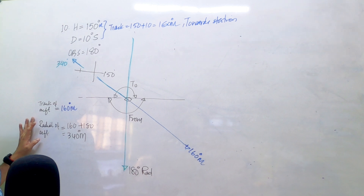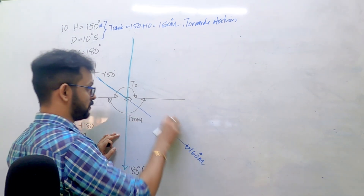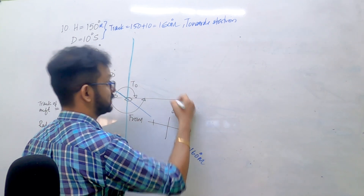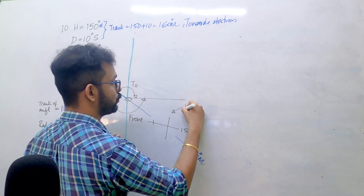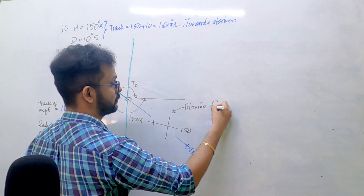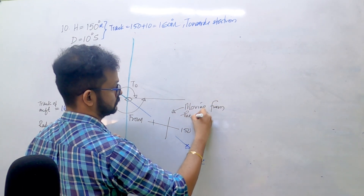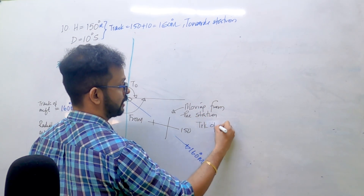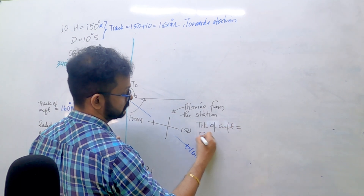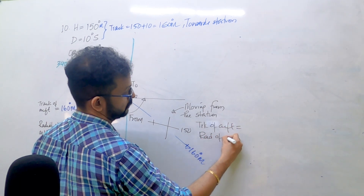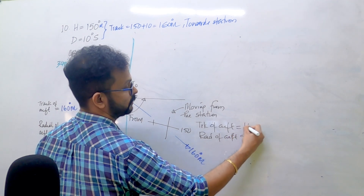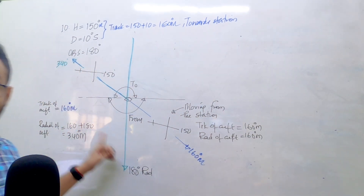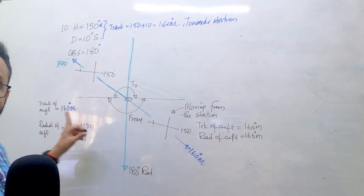If I place the aircraft moving from the station, then both the track of the aircraft and the radial of the aircraft are 160 degrees - both will be the same. Do you understand the difference here?